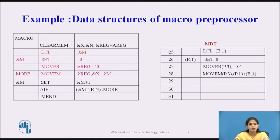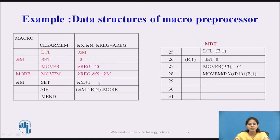For the next statement MOOM &REGISTER, &X + &M: we specify opcode MOOM. For &REGISTER we generate (P,3) — entry 3 in PN tab. For &X, since X is a parameter at entry 1, we generate (P,1). We then specify the plus symbol, and for &M, which is an expansion time variable at entry 1 in EVN tab, we generate (E,1).